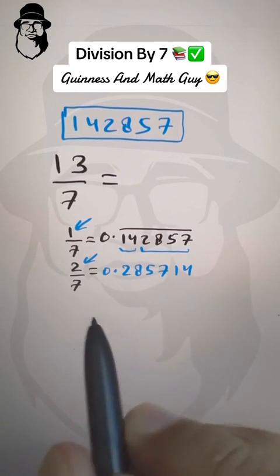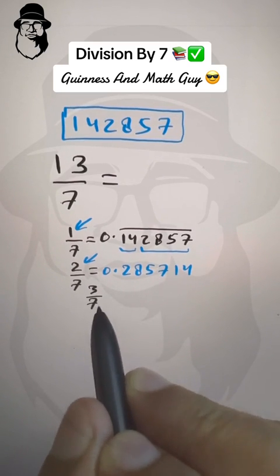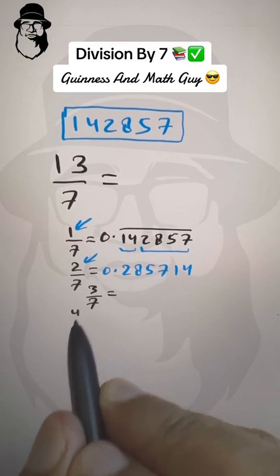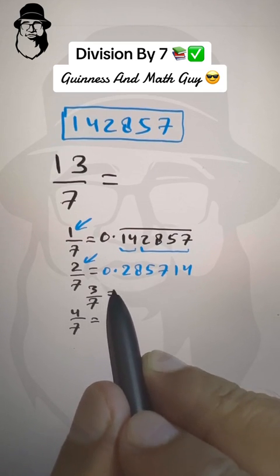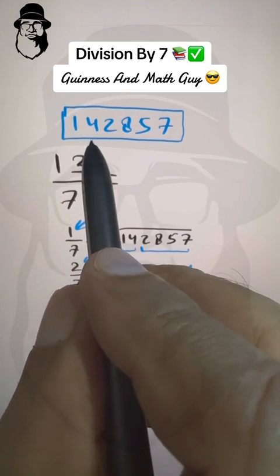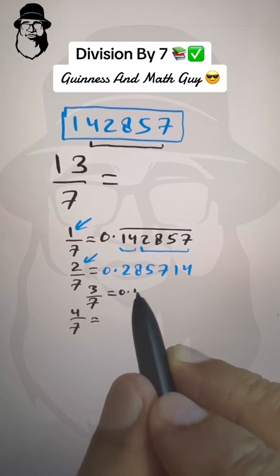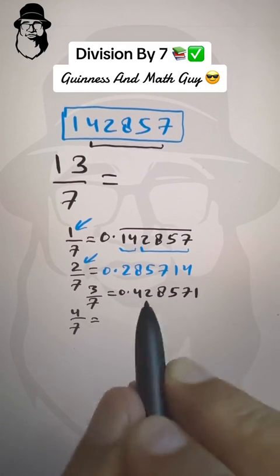And for 3 and 4, you increase 1. So for 3 over 7 and 4 over 7, 3 increase by 1 is 4. So it starts with 4 from here. So 0 point 4, 2, 8, 5, 7, 1, and this will repeat forever.